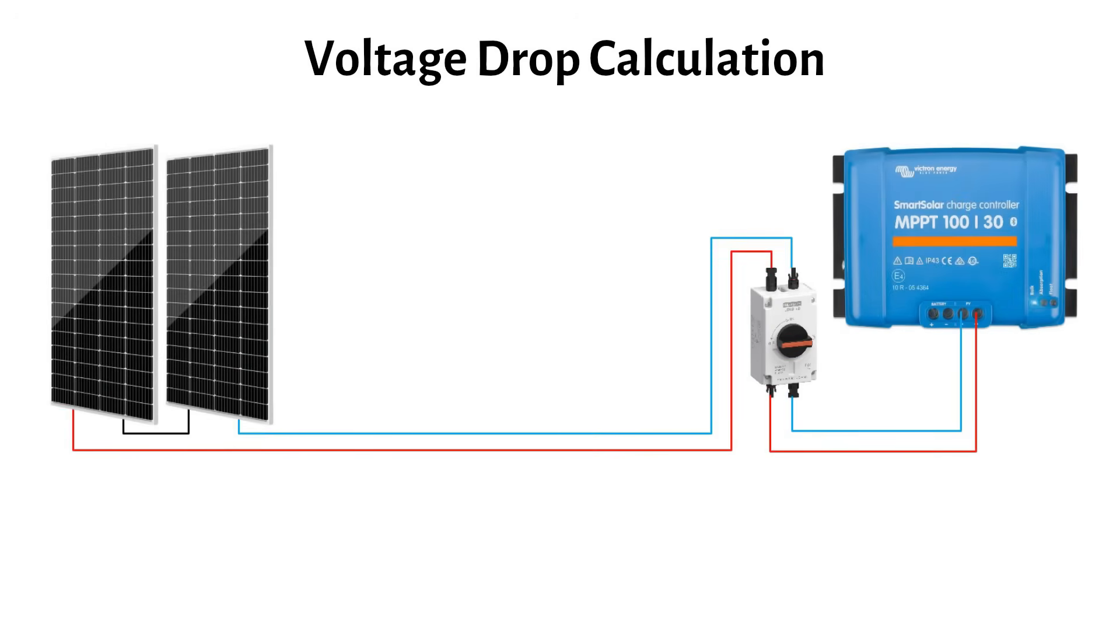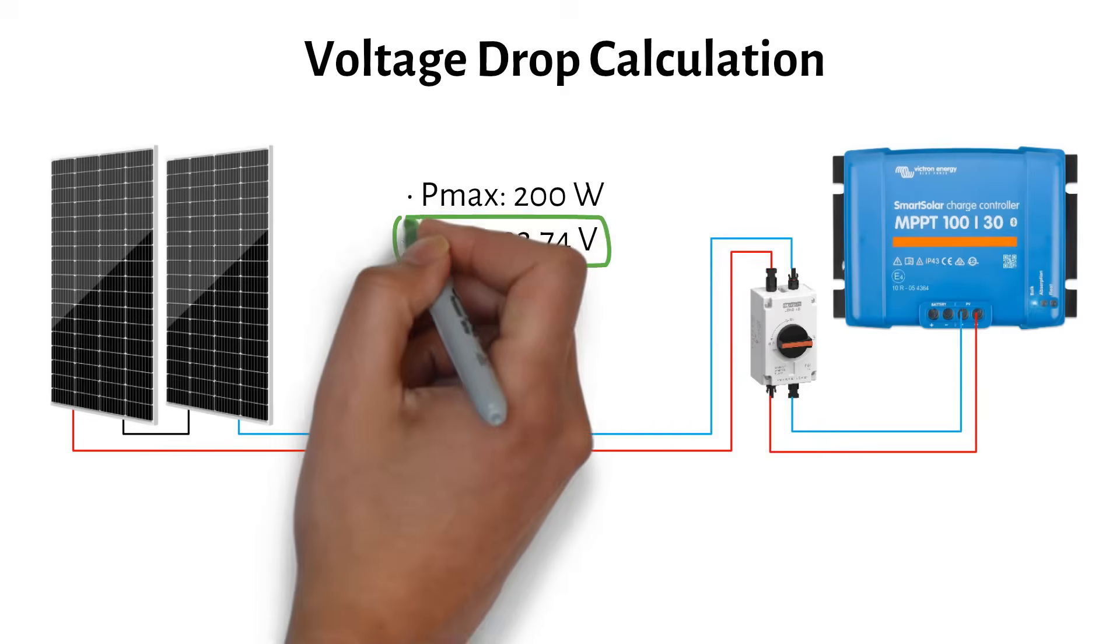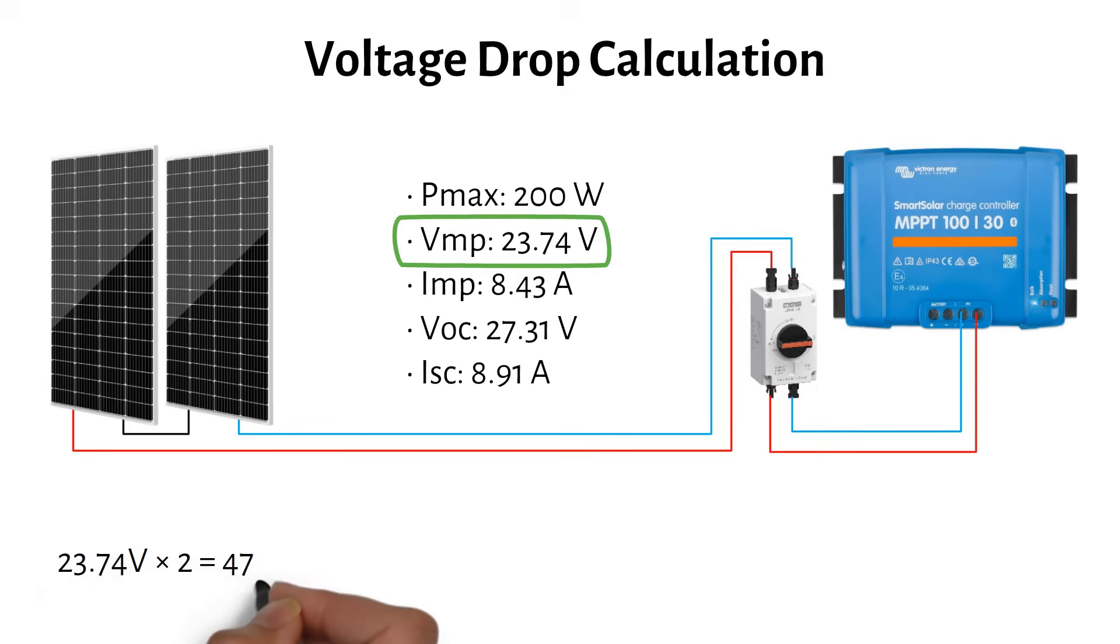So let's start by gathering all the necessary information to calculate it. First, we need the string voltage and the cable length. Remember the solar panel specifications? Two panels in series means the working voltage or VMP is multiplied by two panels. This gives us 47.5 volts.